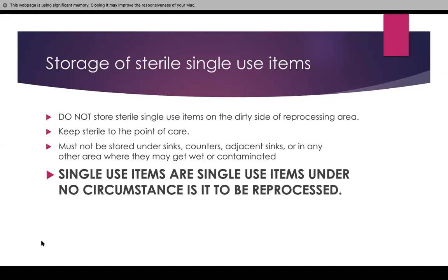For storage of sterile and single-use items, you cannot store them on the dirty side of the reprocessing area. The reprocessing area has to be a single flow — from dirty to the sterilization area to the sterile area. You cannot go from sterile to dirty — the whole concept is loss of sterilization. You have to keep items sterile to the point of care. You cannot store anything under sinks, counters, or adjacent to sinks because they can get wet or contaminated.